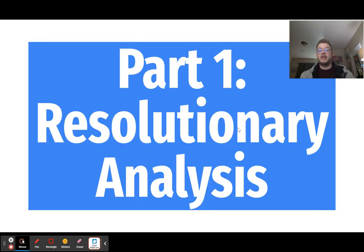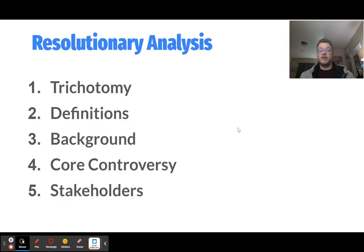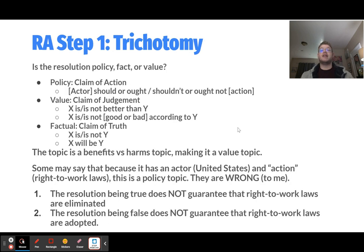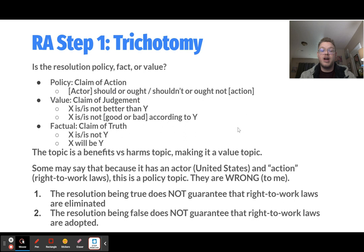The first thing we'll discuss is an analysis of the resolution. Resolutionary analysis in public forum debate has five parts: trichotomy, definitions, background, core controversy, and stakeholders. The first step is identifying the topic type — is it policy, fact, or value? Because this topic is a benefits versus harms topic, it is a value topic. Value topics are phrased as 'X is good,' 'X is bad,' or 'X is better than something else.'